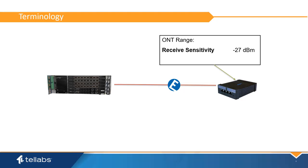Receiver saturation indicates the maximum power input that a receiver can handle before the integrity of the signal is affected. The ONT's maximum received saturation is negative 8 dBm.